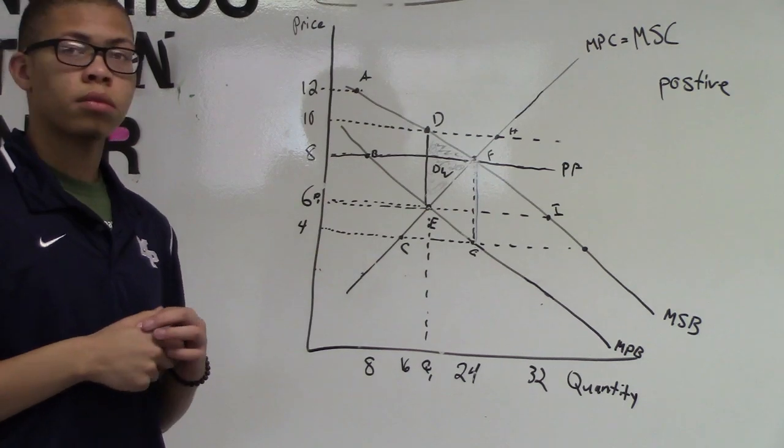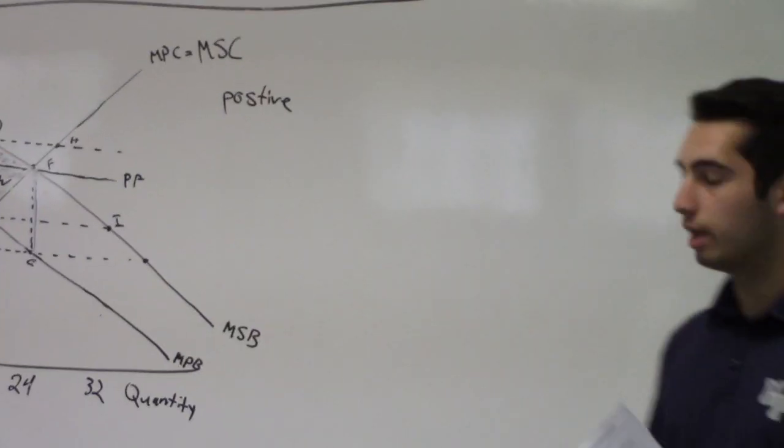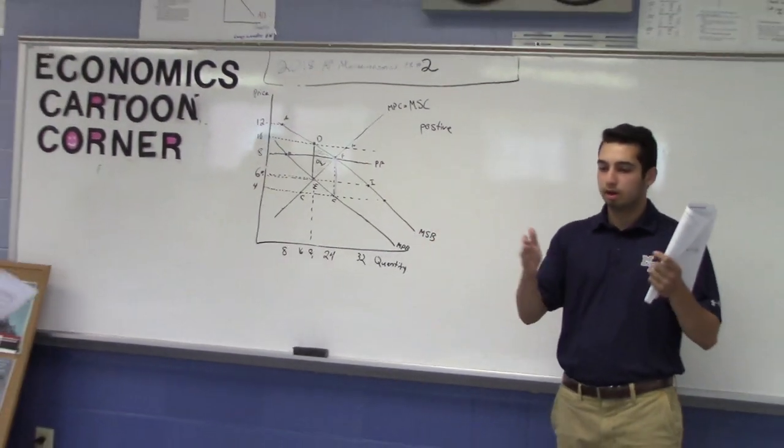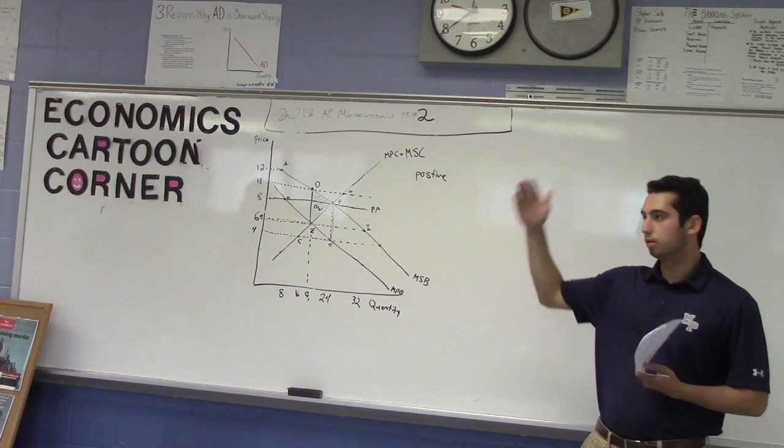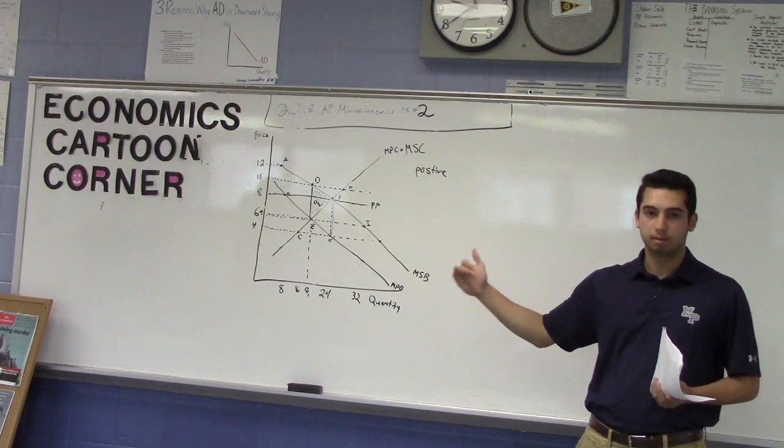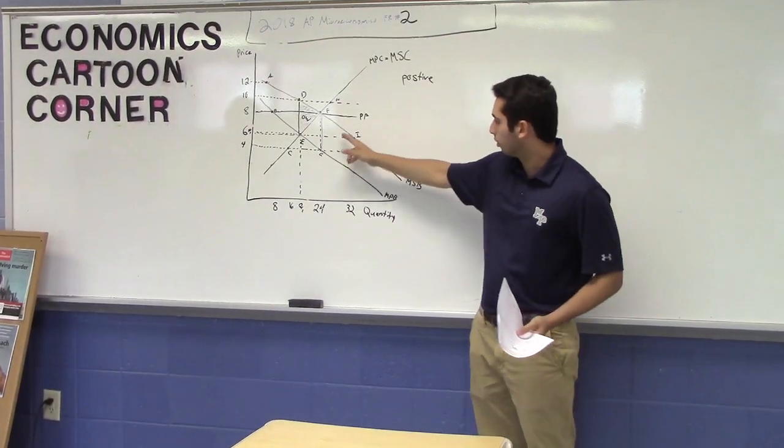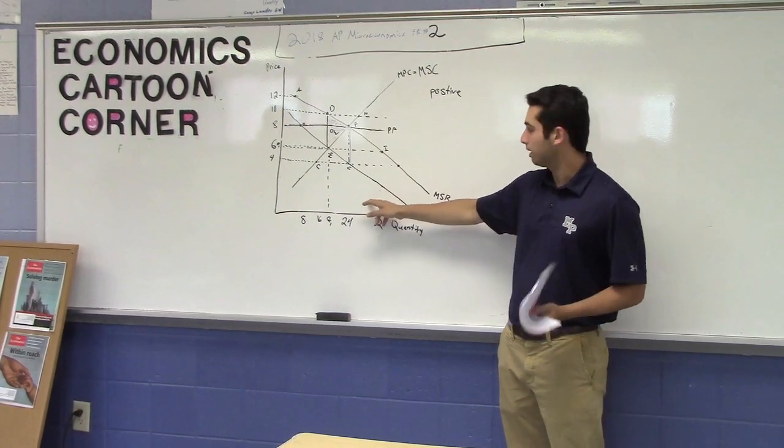Could you guys explain what deadweight loss means? Sure. Well, deadweight loss is described in a monopoly where the amount produced is lower than the equilibrium price in a perfectly competitive market. So here we see that the marginal social benefit is greater than the marginal private benefit.